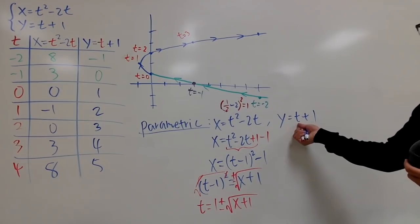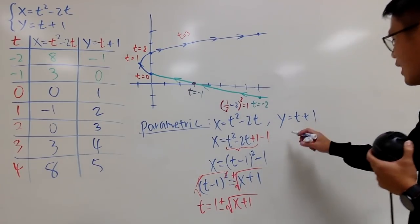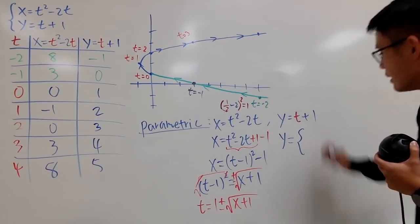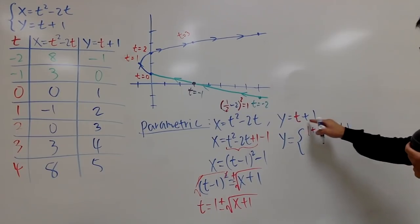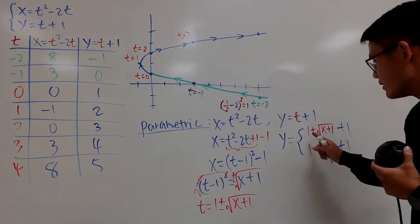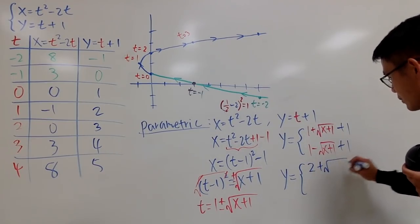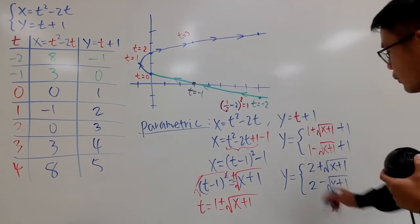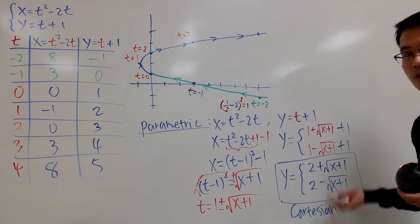Now I'll plug this expression for t into the y equation, y equals t plus 1. Since t has two forms, I'll split it. The first case: y equals (1 plus square root of x plus 1) plus 1, which gives y equals 2 plus square root of x plus 1. The second case: y equals (1 minus square root of x plus 1) plus 1, which gives y equals 2 minus square root of x plus 1. This is the Cartesian form of the equation.